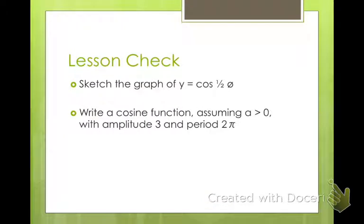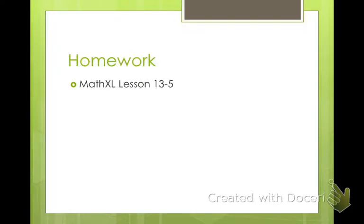So here's your lesson check. I want you to do these two things. Sketch a graph of y equals cosine 1 half theta, and then write a cosine function with an amplitude of 3 and a period of 2 pi. And you're going to do these with your partner when you get to class. And then your homework is 3, 5, and I hope you have a great night.